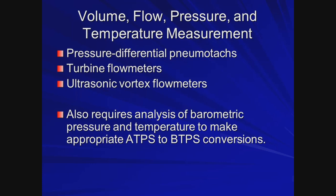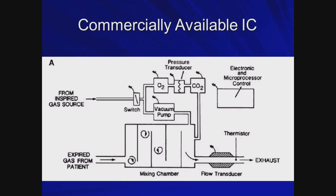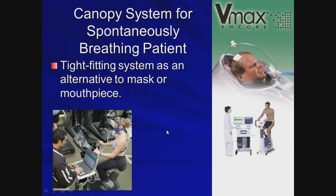There is a conversion from ATPS to BTPS involved. Internally, the system mixes the gas thoroughly, which is very important, then samples it and measures O2, CO2, and volume. Some systems use a hood or space-suit sealed around the patient for a tight seal; others use a mask system on a patient on a bike — it's just a matter of sampling the two gases.